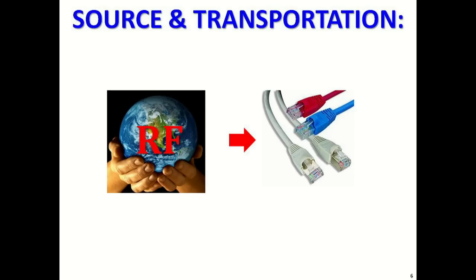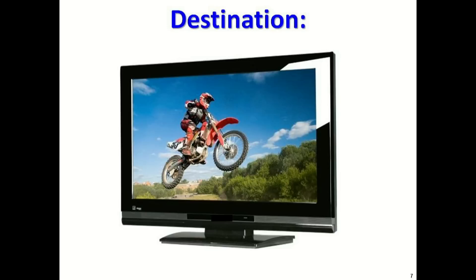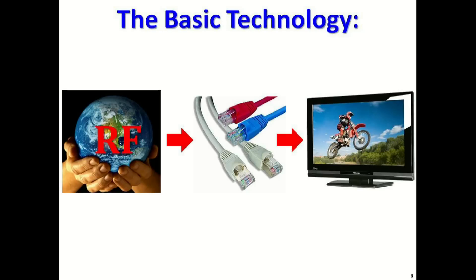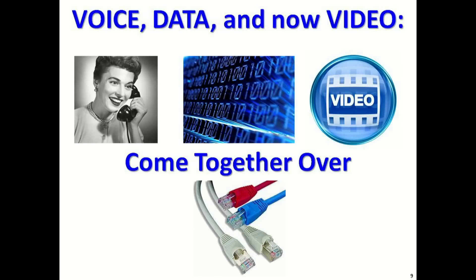So now we have the source and the transportation — we're going to transport it to a television, of course. Simply put, we use structured cable as a means to distribute RF video from a number of different sources to a display or multiple displays. Now we have this voice, data, video convergence, whereas before, structured cabling was a realm designed for only voice and IP. Z-Band makes it easy by bringing these three worlds together over the same cable in a plug-and-play environment.